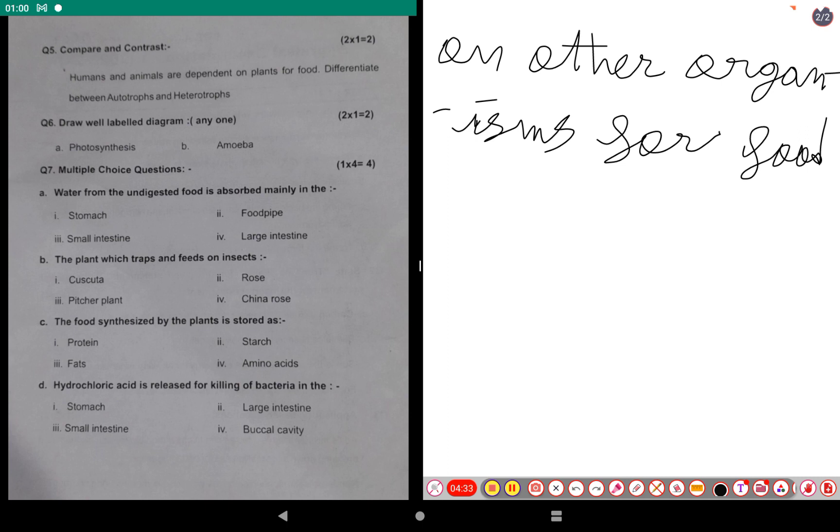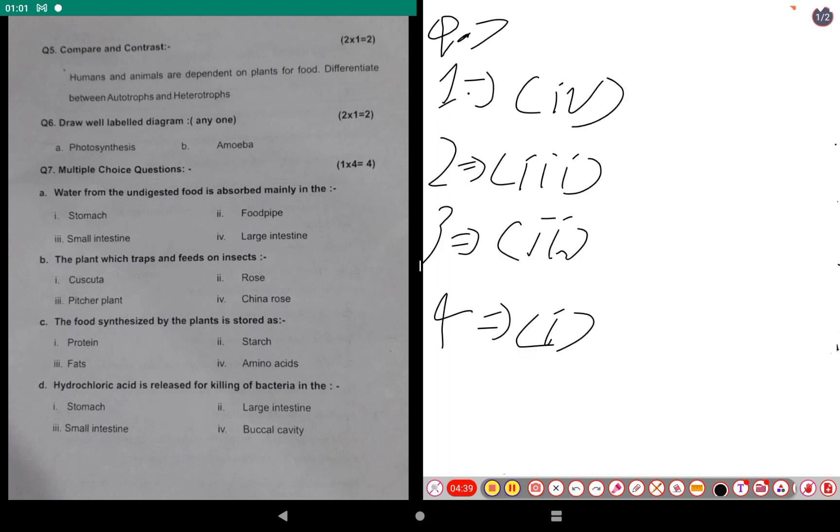The final question for this video is multiple choice questions. The answers for the first multiple choice question: water from undigested food is absorbed mainly in the large intestine. So that is the answer for that. The second question: the plant which traps and feeds on insects, and the answer for this question is the pitcher plant.